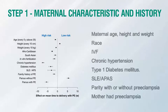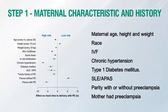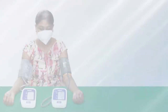A training video for staff is available at the IRI Samrakshan site. In maternal characteristics and history, we need to ask for the mother's age, height, weight, and racial origin; whether it is an IVF or natural pregnancy; history of chronic hypertension, diabetes, SLE, or antiphospholipid syndrome; history of preeclampsia in a previous pregnancy; and whether the patient's mother had a history of preeclampsia.